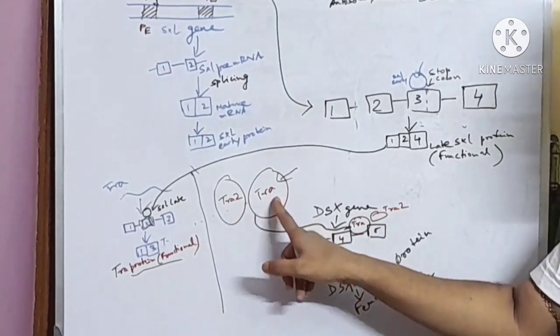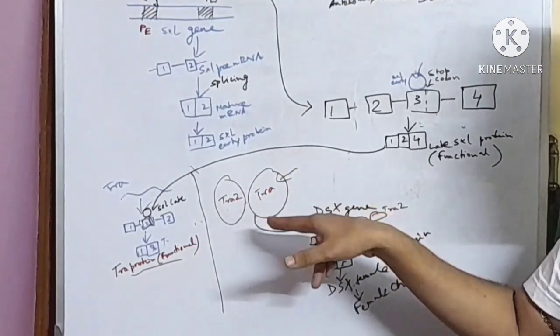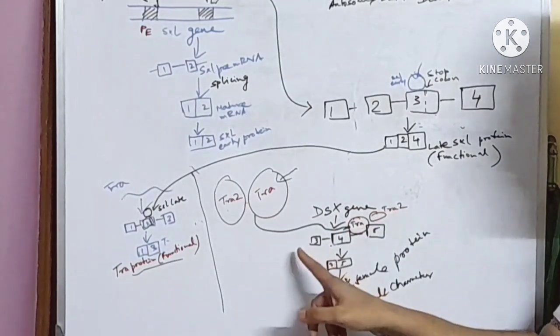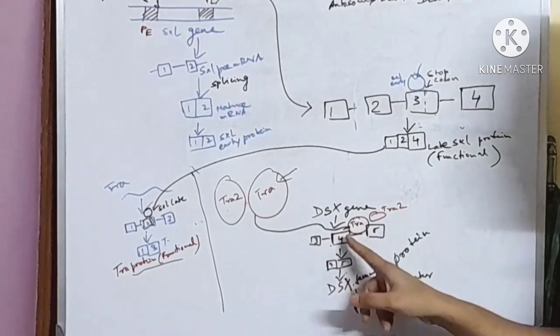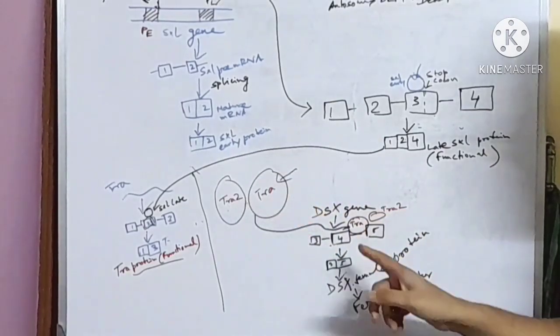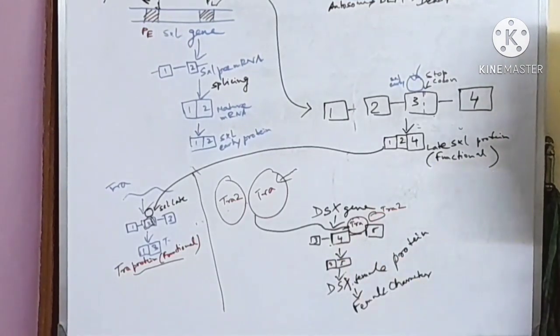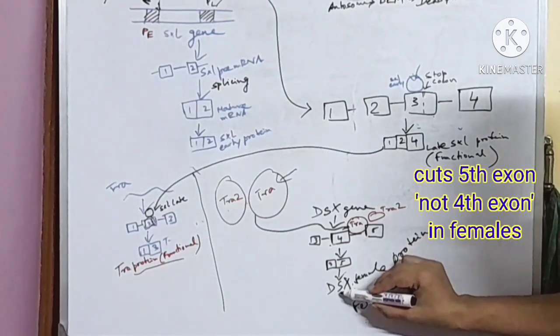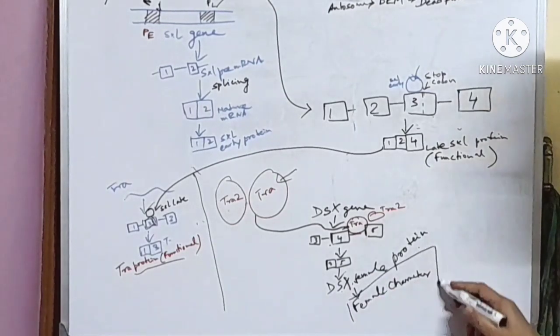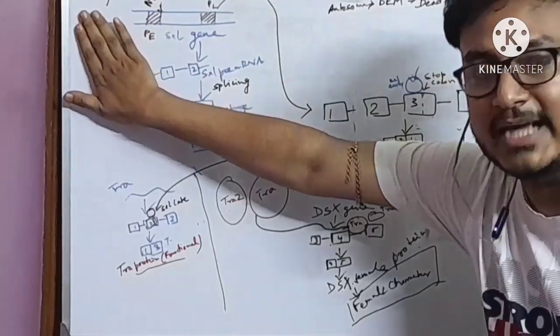We have already talked about how functional TRA protein is produced. After that, TRA binds with another protein called TRA2 protein and that complex binds with the product of DSX transcription. The DSX transcription has exons three, four, and five. This TRA complex binds with that product and cuts the fourth exon and produces a protein called DSX female protein that produces female characteristics.